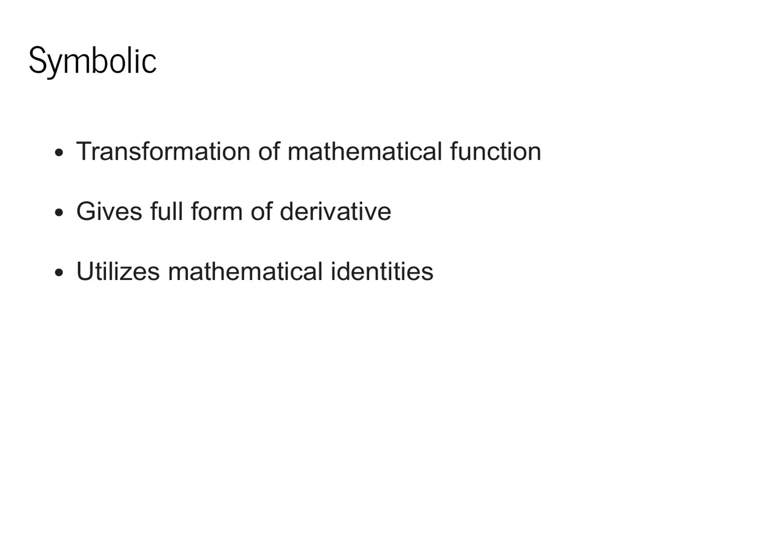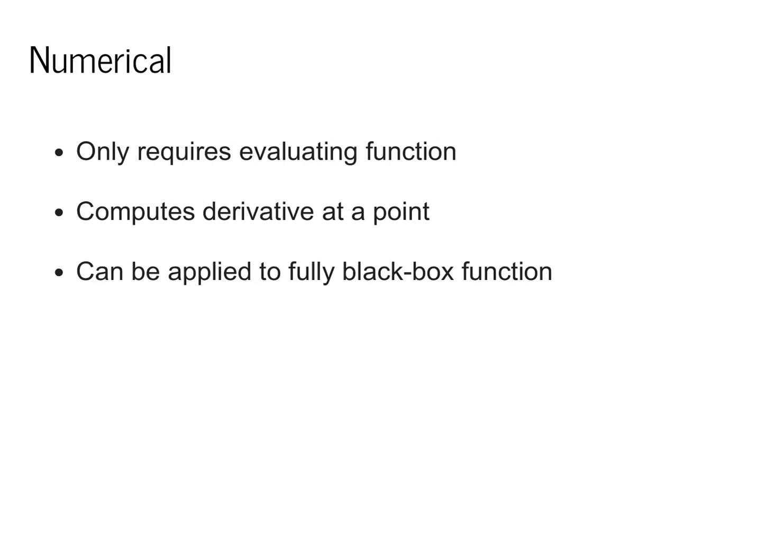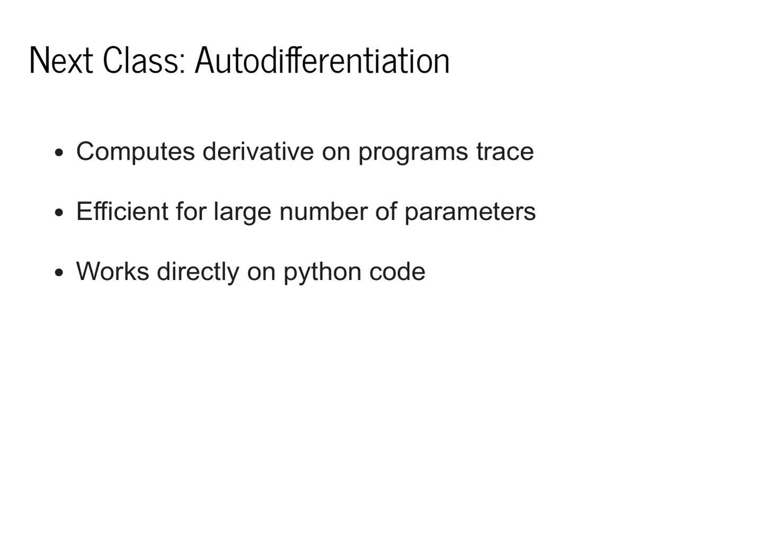Let me conclude by talking about the positives and the negatives of both these approaches. For symbolic derivatives, we are able to fully transform the mathematical function and get access to a mathematical function for f prime. This utilizes standard mathematical identities and gives us full access to what we need. Numerical derivatives, on the other hand, are slightly more flexible. They only require the ability to evaluate the function, and they give us the ability to compute the derivative at a given point. However, every time we want access to a given derivative value at x, we need to actually evaluate the original function possibly multiple times. This allows us to apply it to black box functions, but is much less efficient than extracting the full symbolic form for any input x. In the next class, we're going to turn to automatic differentiation. Automatic differentiation gives us some of the benefits of both approaches. It's going to allow us to compute derivatives on a range of different program traces, and it's also efficient in that we'll be able to apply it in a large number of parameter settings where it's hard to apply numerical derivatives. We'll also see that automatic differentiation works nicely with Python code, and we'll actually start to implement this in practice for scalar values.